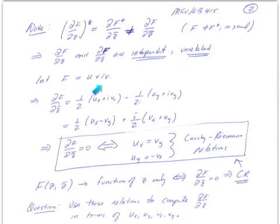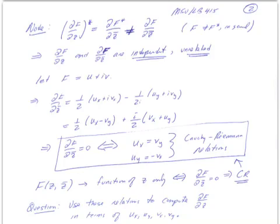Suppose we decompose capital F as a real part and an imaginary part: F(x,y) = u(x,y) + i·v(x,y). If we look at the partial derivative of F with respect to z-bar using the expressions from the previous slide, we can rewrite it as (1/2)(u_x + i·v_x) minus (1/2i)(u_y + i·v_y). Combining real and imaginary parts, the real part is (1/2)(u_x − v_y) and the imaginary part is (i/2)(v_x + u_y).